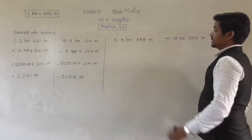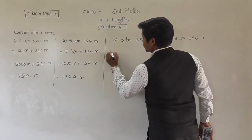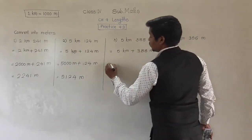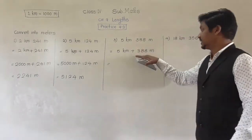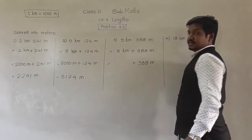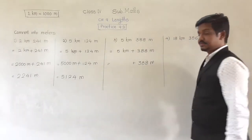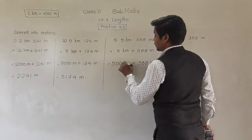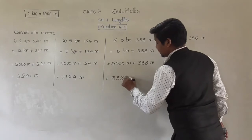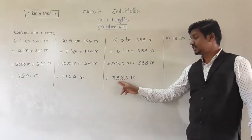Next: 5 kilometer 388 meter. Put a plus sign between them: 5 kilometer plus 388 meter. 388 is already in meters, keep it as it is. 5 kilometer needs to be converted into meters. 1 kilometer means 1,000 meters, so 5 kilometer means 5,000 meters. Therefore 5,000 plus 388 equals 5,388 meters. So 5 kilometer 388 meter is the same as 5,388 meters.